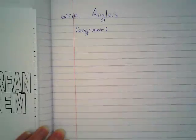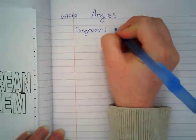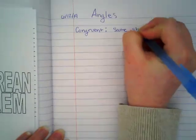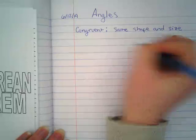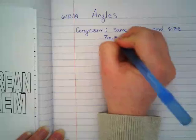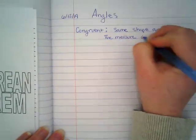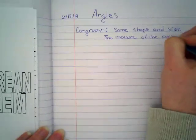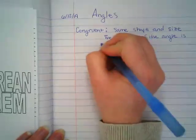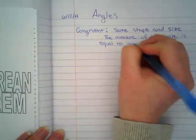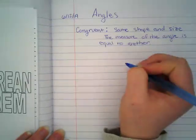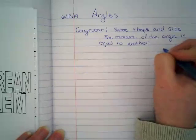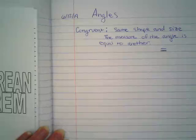Who can tell me what congruent means? Same shape and size. So in other words, the measure of the angle is equal.